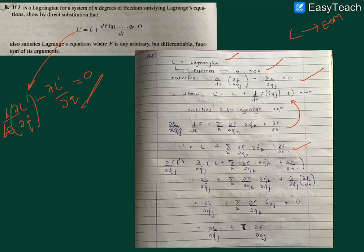We'll first find the value of ∂L'/∂Q̇_j. We'll put the value of L prime here and we get ∂/∂Q̇_j of [L plus summation ∂F/∂Q_k times Q̇_k plus ∂F/∂t].